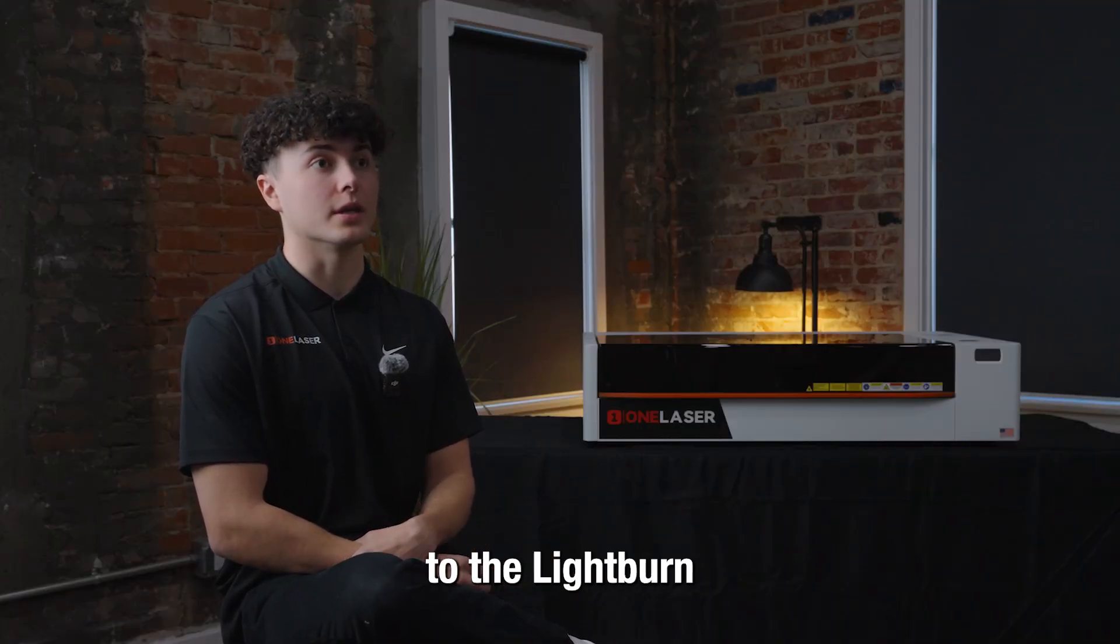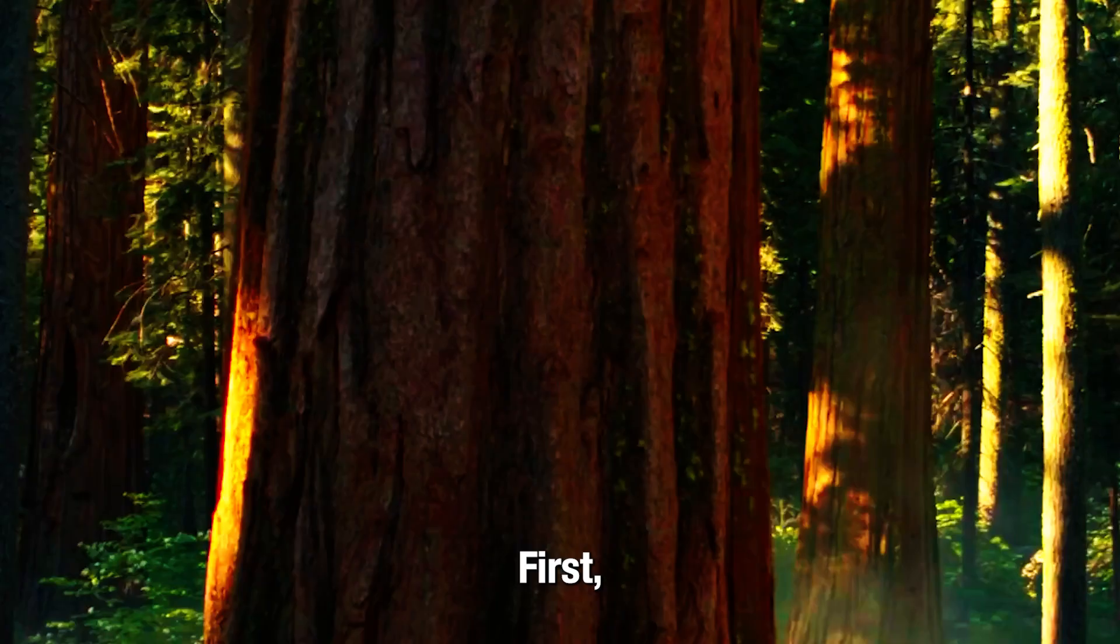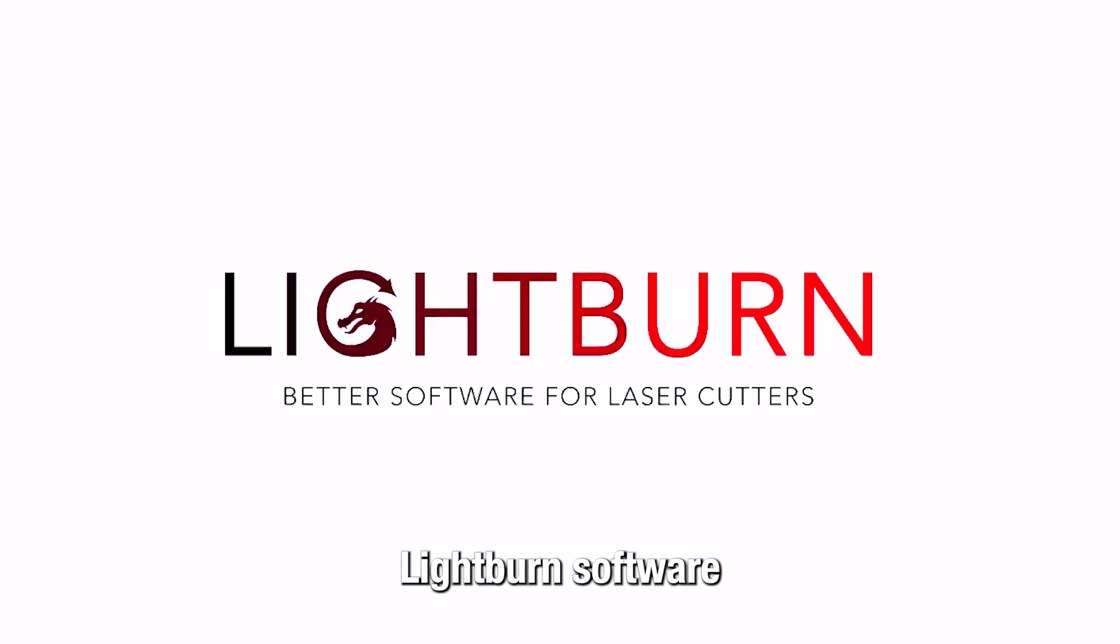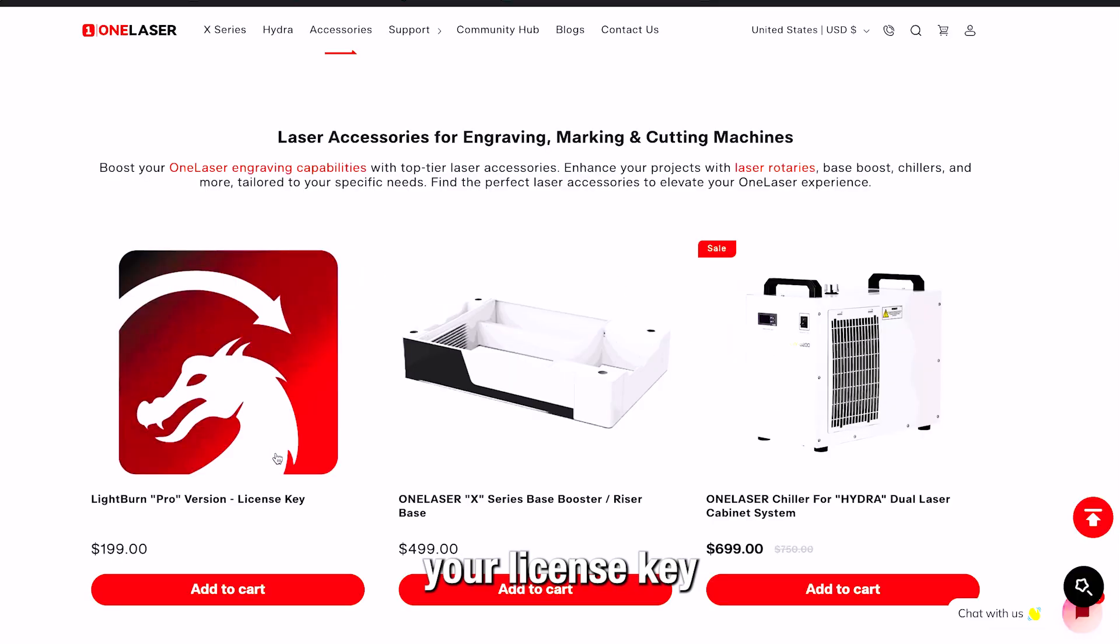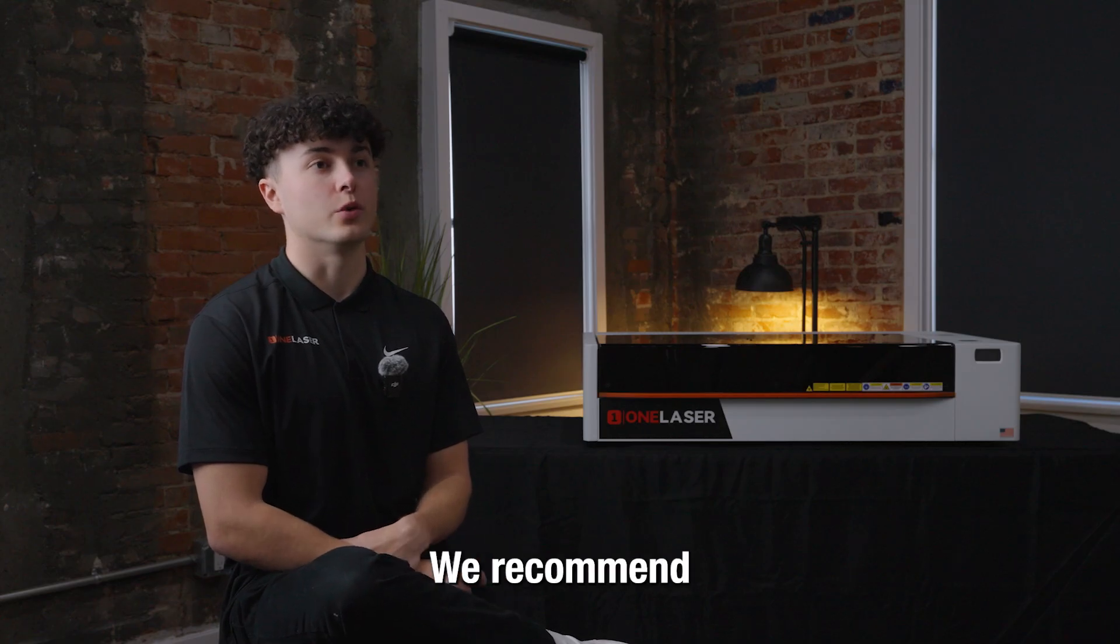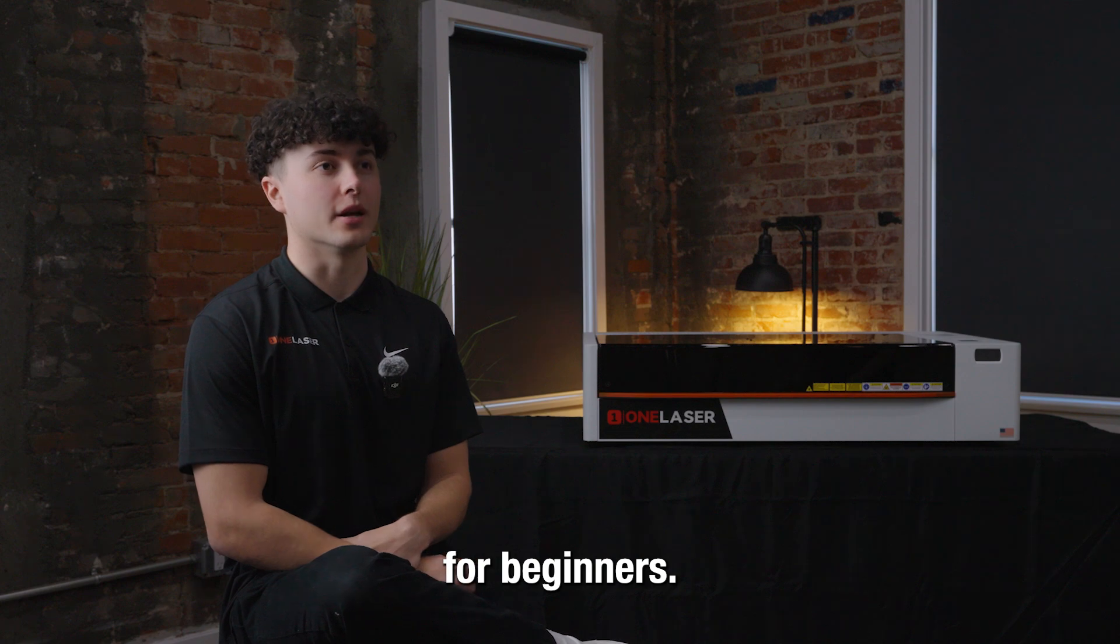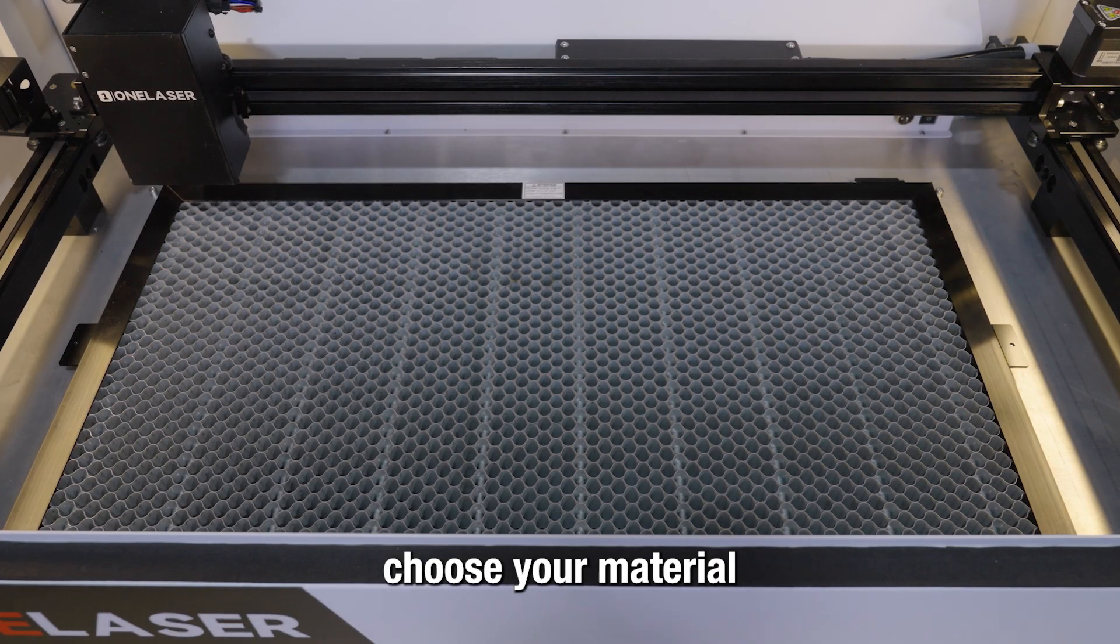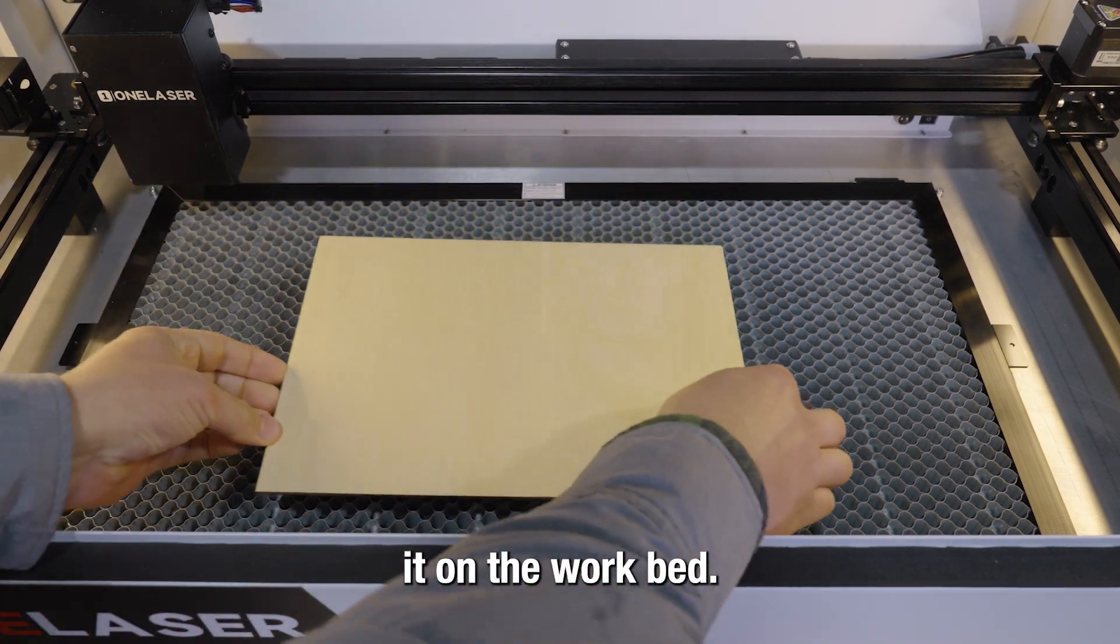Next, we're going to move on to the Lightburn configuration steps. First, install the Lightburn software and enter your license key, which you can purchase on our website. Choose a material—we recommend wood or acrylic for beginners—and place it on the workbench.